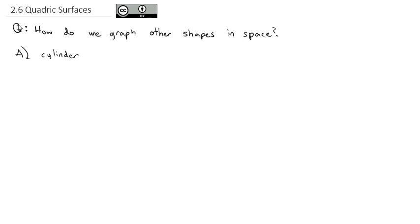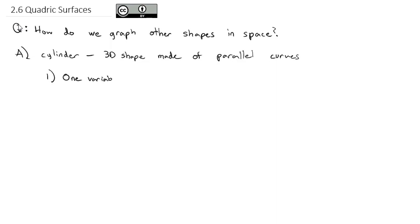A cylinder in 3-space graphing is not what we normally think of — like a soup can. A cylinder is defined here as any 3D shape made of parallel curves. The most basic form of that is when one variable is missing from the equation. In that case, we will graph in the other planes and copy down the missing variable.